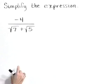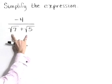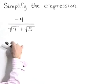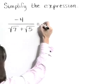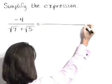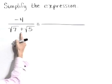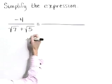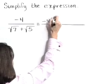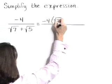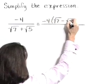We're going to simplify this expression by removing those radicals from the denominator. Do that by multiplying the numerator and denominator by the conjugate of the square root of 7 plus the square root of 5, which is the square root of 7 minus the square root of 5.